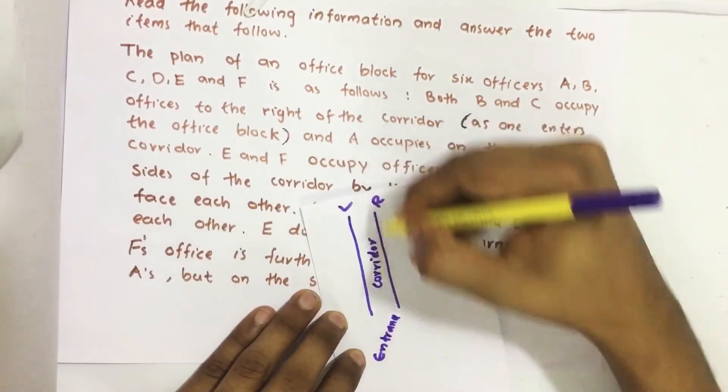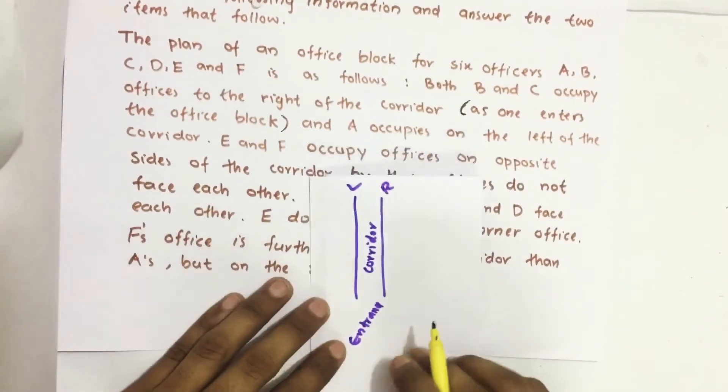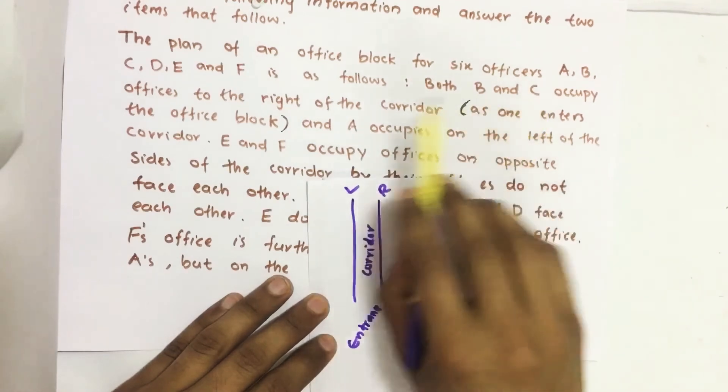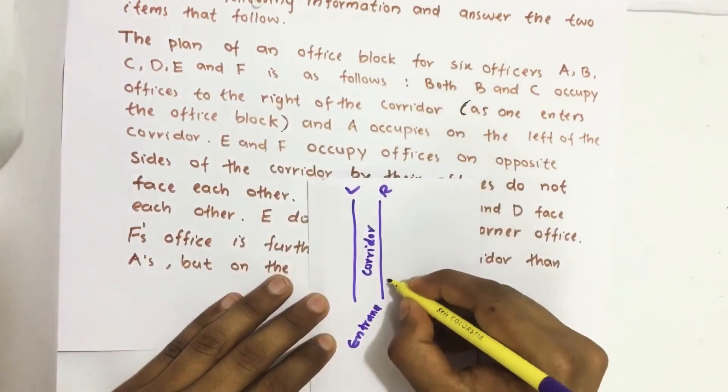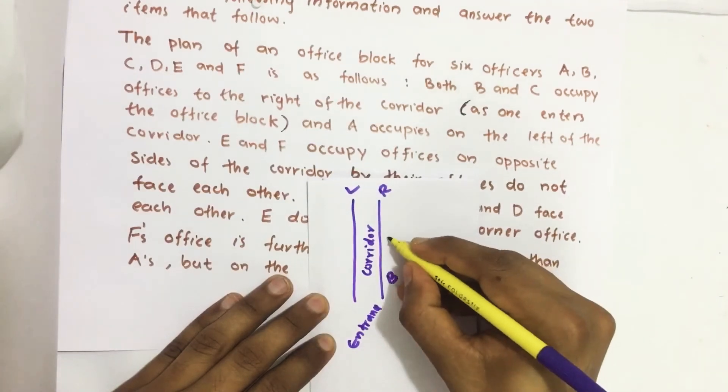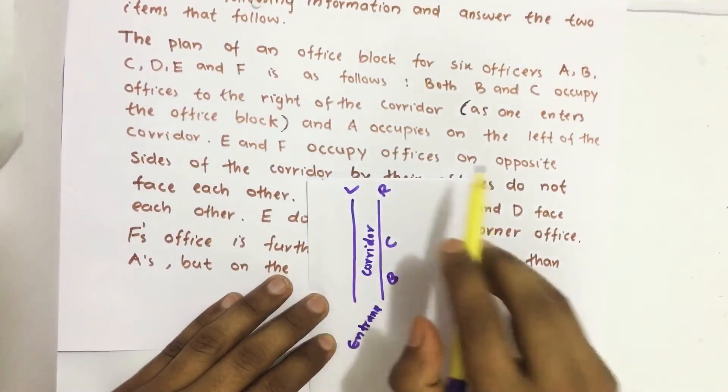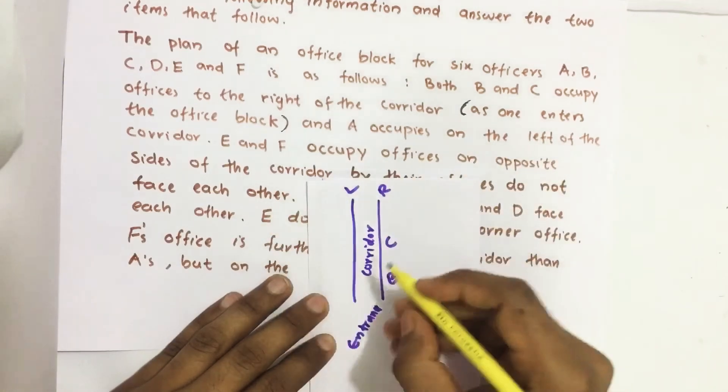The right side, left side while we are entering into the office. Both B and C occupy offices to the right of the corridor. B and C occupy to the right of the corridor. And A occupies on the left of the corridor.